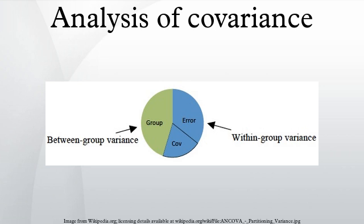Unexplained variance includes error variance as well as the influence of other factors. Therefore, the influence of covariates is grouped in the denominator. When we control for the effect of covariates on the dependent variable, we remove it from the denominator, making F larger, thereby increasing your power to find a significant effect if one exists.